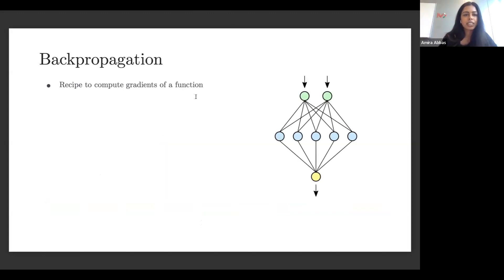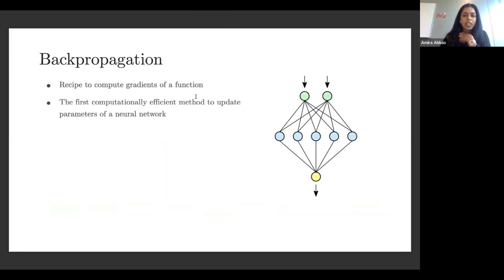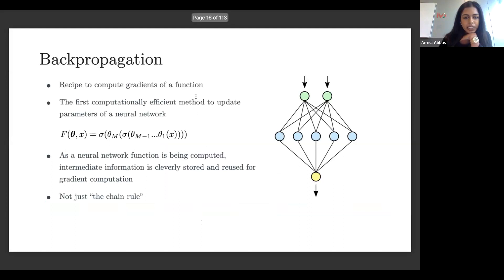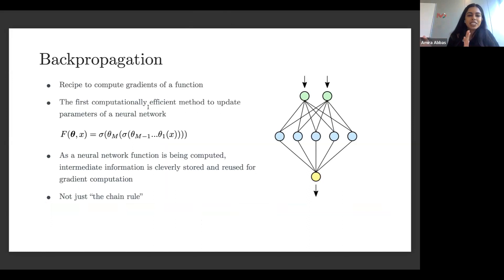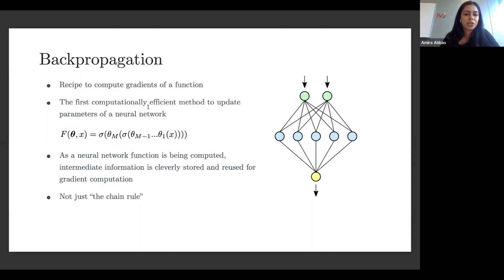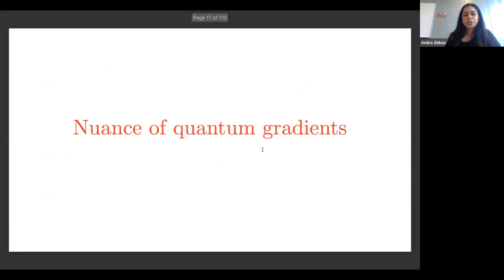Backpropagation is a recipe to compute gradients of some parameterized function, and it's computationally efficient to do so. A lot of people say it's just the chain rule, but it's a little more sophisticated — information is computed in a function in a very clever way such that it's stored and reused to compute gradients. It's not just the chain rule; it's also information reuse within a model. This is quite a nice property of backpropagation.